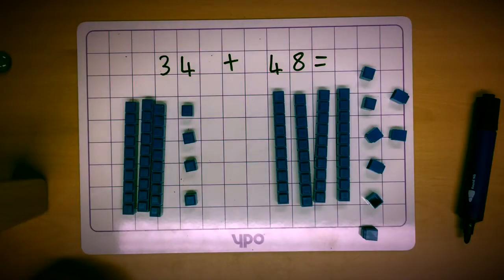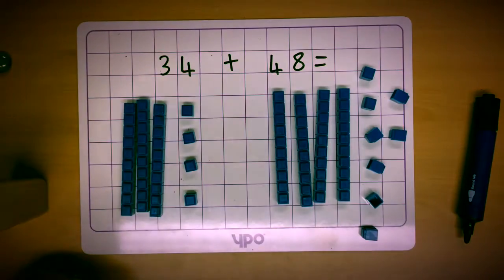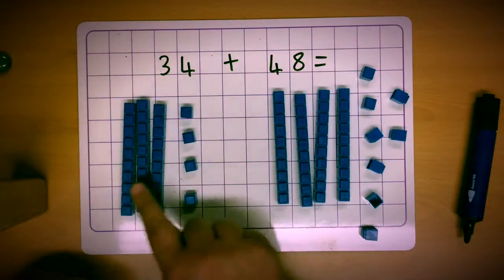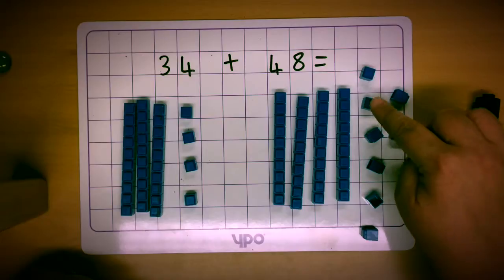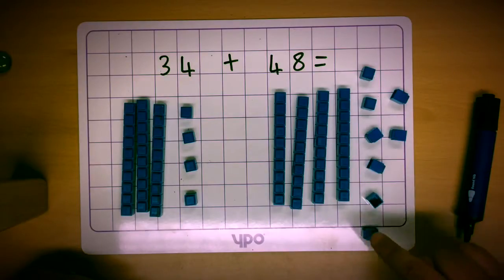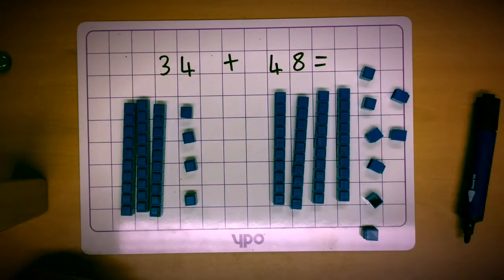When they have them in front of them the children can actually see and count that they have the right numbers. 10, 20, 30, 1, 2, 3, 4, 34. 10, 20, 30, 40, 41, 42, 43, 44, 45, 46, 47, 48.